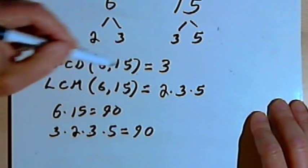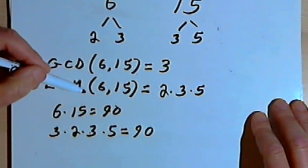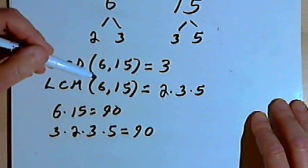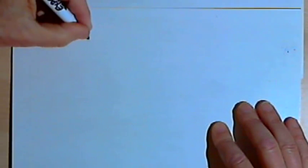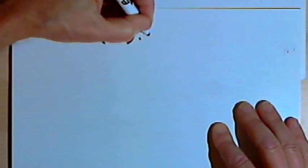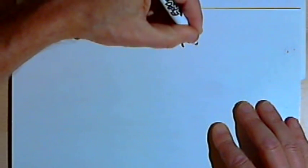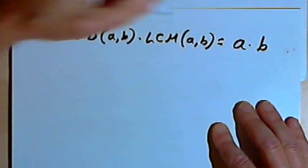So the GCD times the LCM is going to be equal to the product of the two numbers I'm dealing with. I can write this in a general way — let's write the rule. The GCD of two numbers, let's call them A and B, times the least common multiple of those two numbers, A and B, equals A times B.